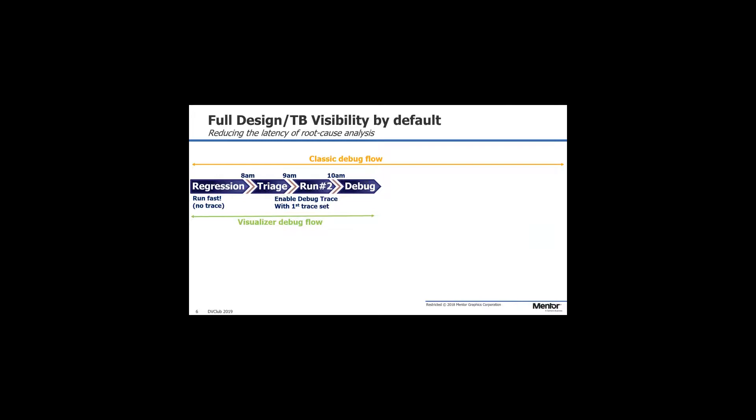What Visualizer allows you to do is reduce some of this. You run regression fast with zero tracing, go through your triage step, then just flip on and debug. Visualizer is designed such that you can enable full debug with very, very low impact on simulation time. It's getting towards the stage where you don't need to decide whether you want to run with visibility or not — you can just run with visibility enabled and the impact is very, very small. You can run minimum trace sets and get very fast simulation compact results, with very low logging overhead.